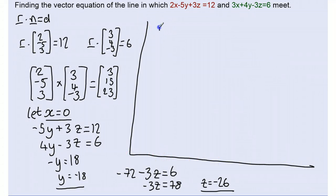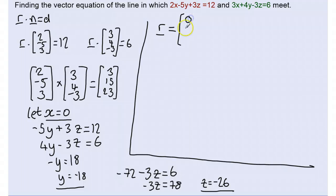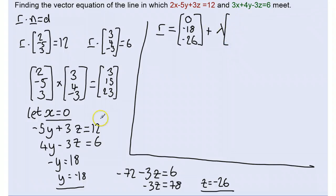We can now write down the equation of the intersection as r equals our position vector (0, -18, -26) plus lambda times our direction vector (3, 15, 23).